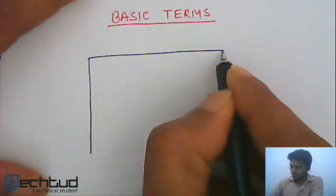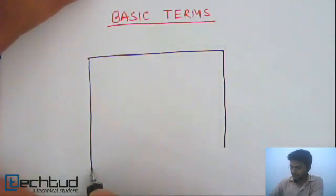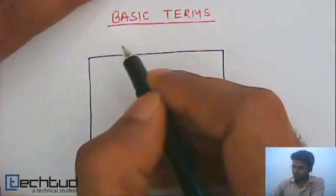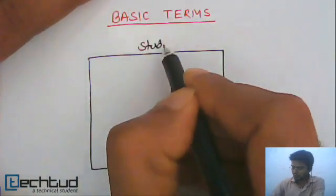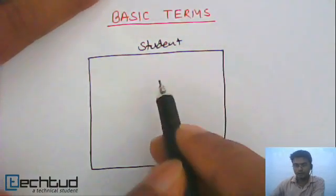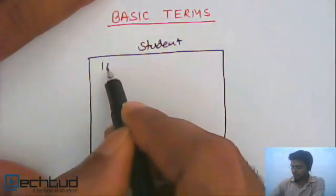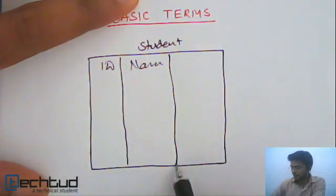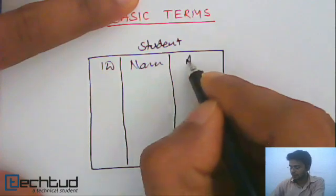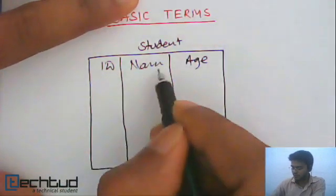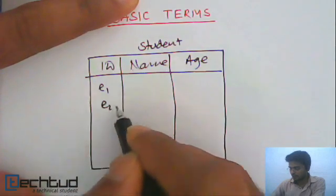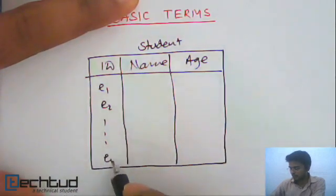Consider we have a database and a table. Let's say I'm storing information of students in a table. I have student ID, I have name, and I have age. This is E1, E2, similarly this is EN.